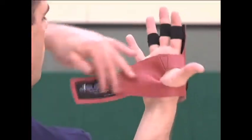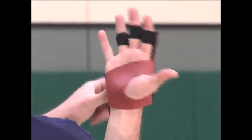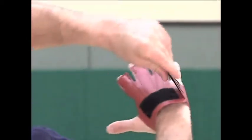Insert the thumb, then wrap the strap around the bottom side of the hand. Secure the Velcro strap snug, but not too tight where it restricts wrist joint movement.